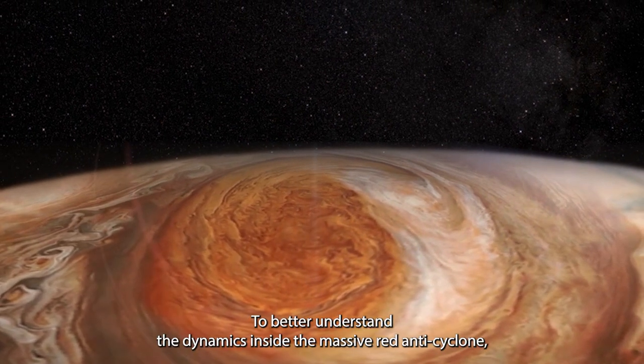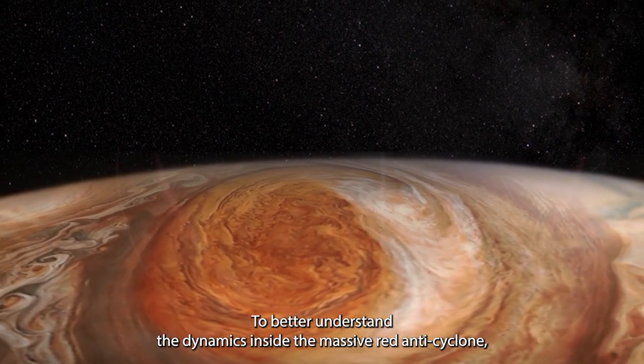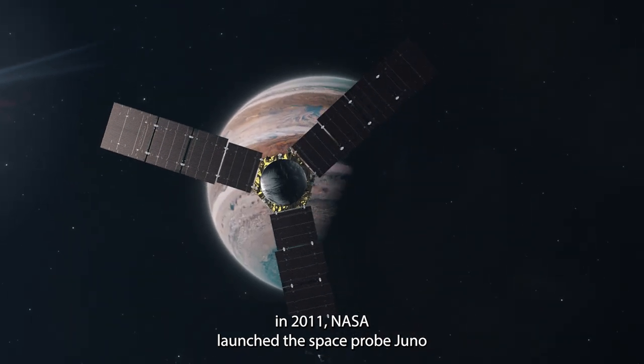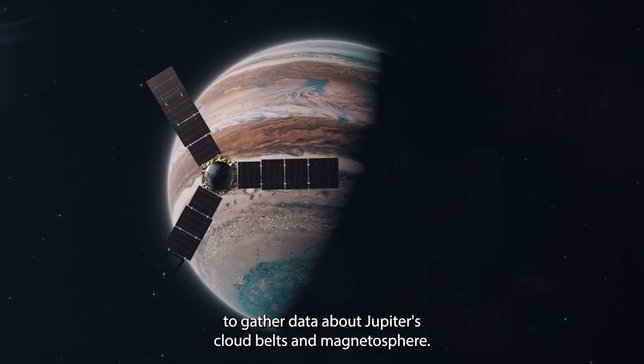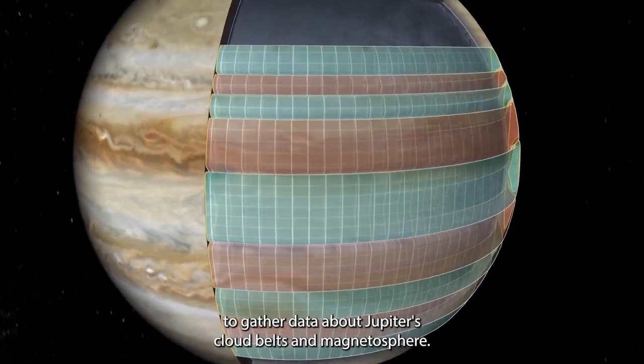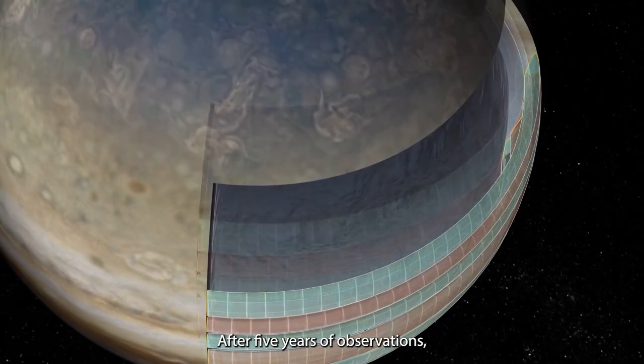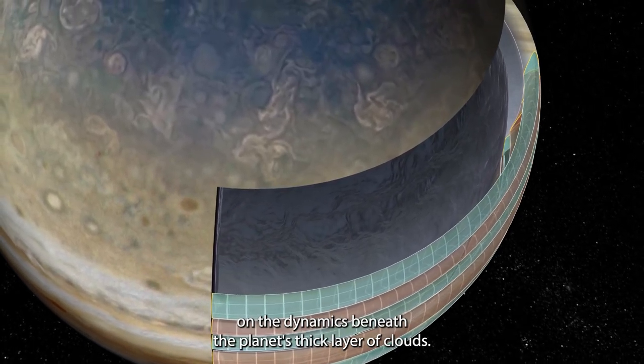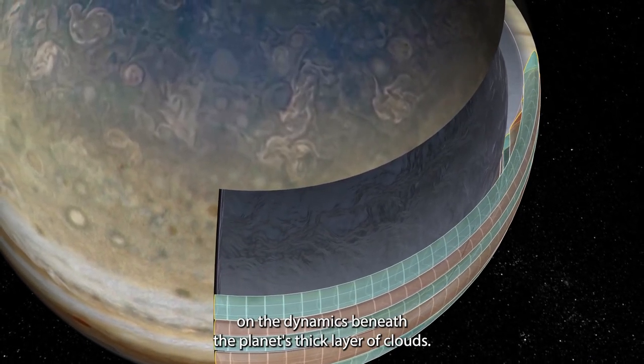To better understand the dynamics inside the massive red anti-cyclone, in 2011, NASA launched a space probe, Juno, to gather data about Jupiter's clouds, belts and magnetosphere. After five years of observations, Juno has produced amazing data on the dynamics beneath the planet's thick layer of clouds.